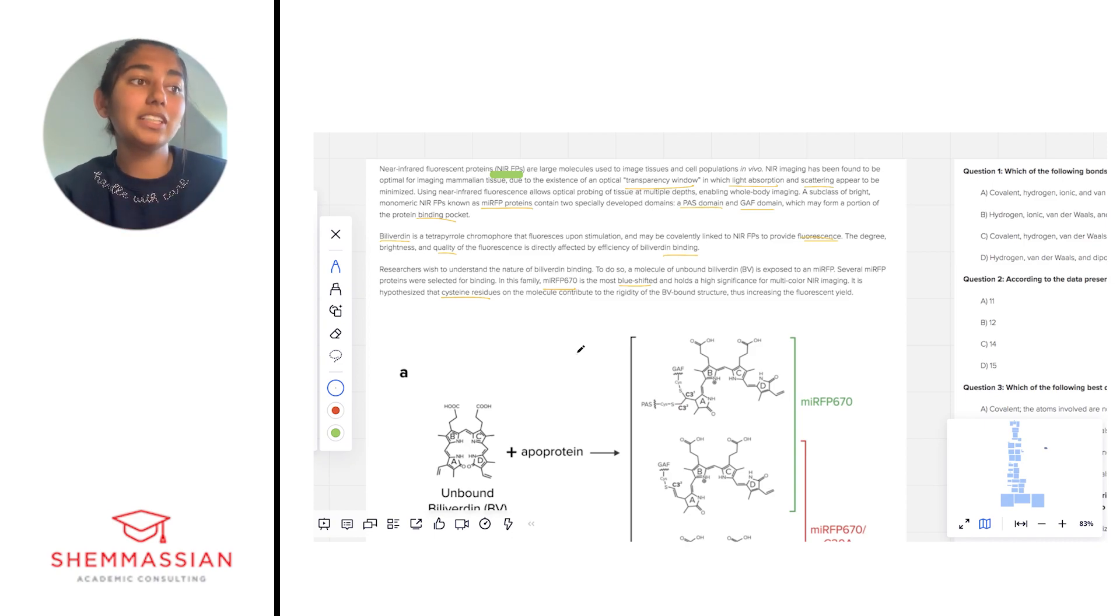It is hypothesized that cysteine residues on the molecule contribute to the rigidity of the BV bound structure, thus increasing fluorescent yield. They particularly called attention to cysteine residues, and because we have to memorize the amino acids for the MCAT, I'm recalling that cysteine has a thiol group (SH), which makes it one of the amino acids that's able to create disulfide bonds with other cysteine residues. So that might have something to do with the binding pocket.